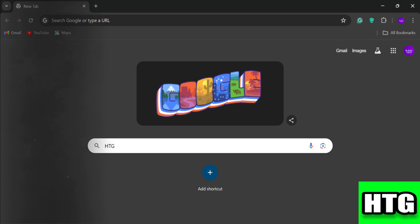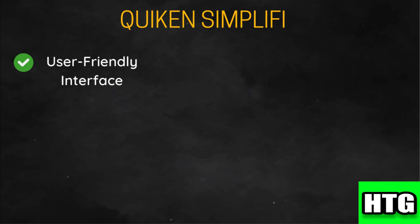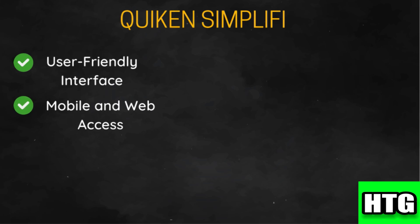Beginning with Quicken Simplify: it is designed to be easy to use with a modern and intuitive interface that is accessible for users of all experience levels. It offers seamless access through both mobile and web platforms, making it easy to manage your finances on the go. It helps users create and manage budgets, track spending, and set financial goals.